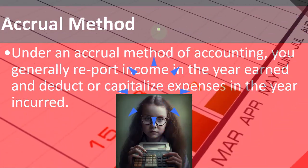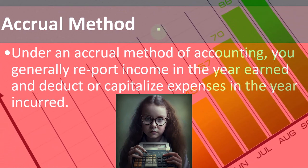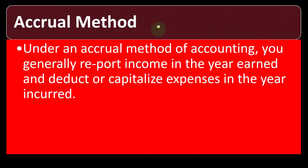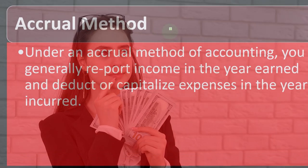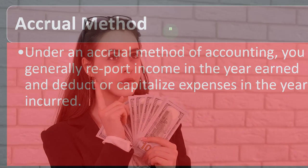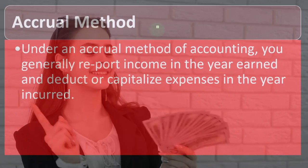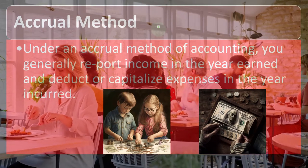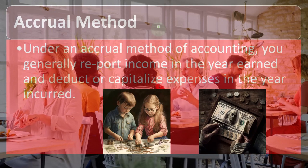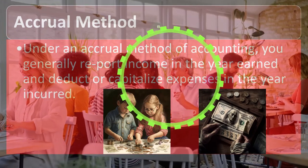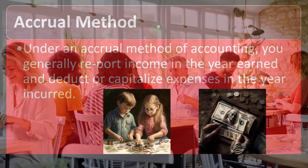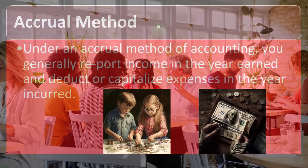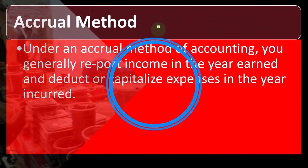Under an accrual method of accounting, you generally report income in the year earned and deduct or capitalize expenses in the year incurred, as opposed to a cash-based method where you report income when cash was received and deductions when cash was paid. Note that many transactions will record the same way under either method. For example, in a restaurant where you give someone food and they pay immediately, both methods record revenue at the same point — just for different reasons.